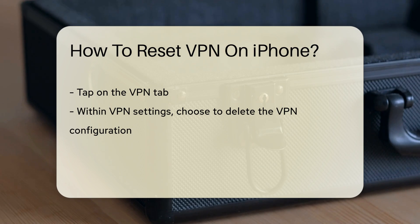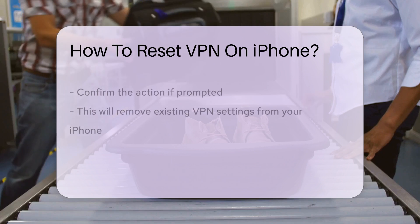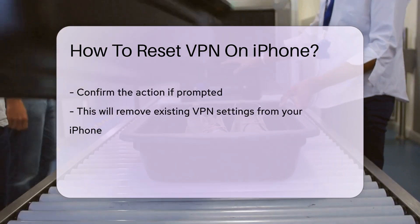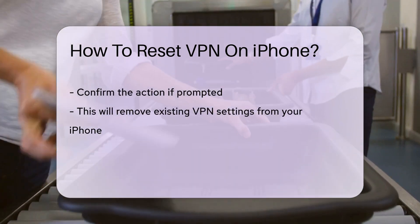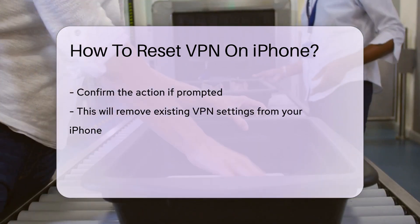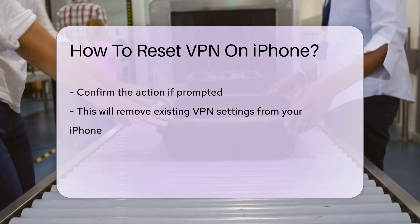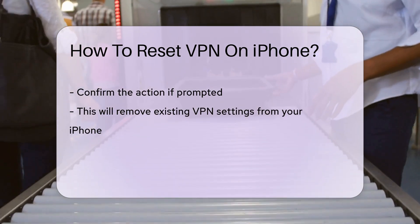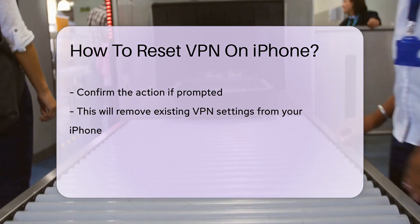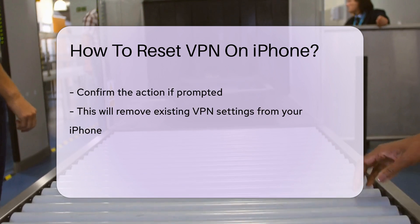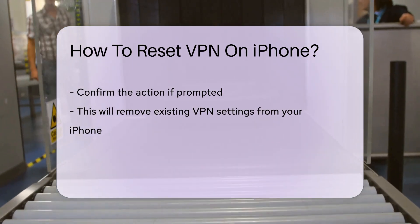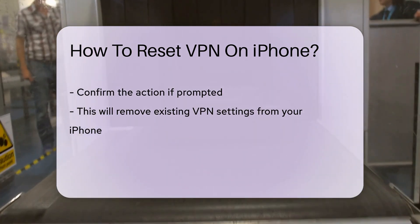After deleting the VPN configuration, you can set up a new VPN connection by tapping on the Add VPN Configuration option. Follow the on-screen instructions to input the necessary details for your new VPN connection. Once you've entered the required information, save the settings.